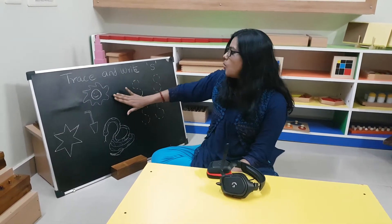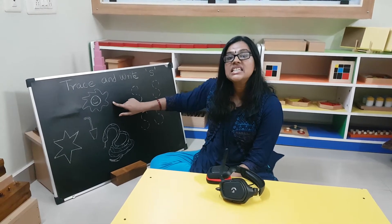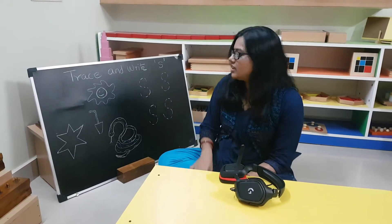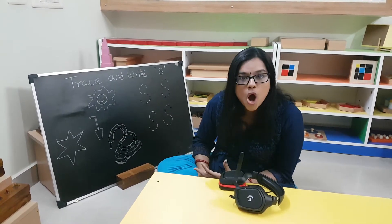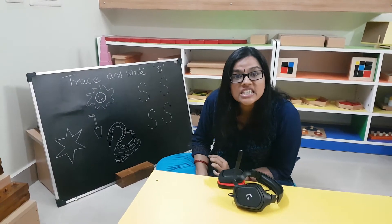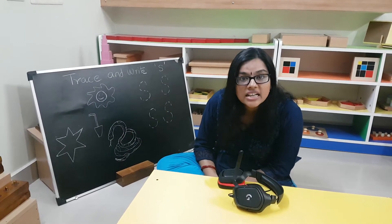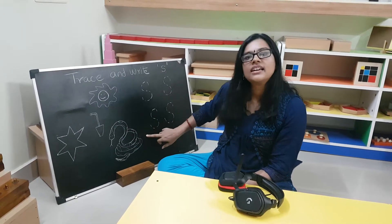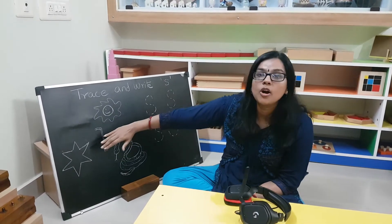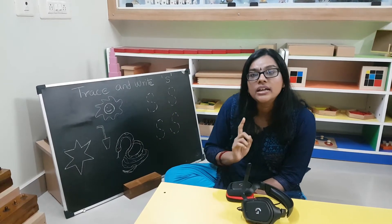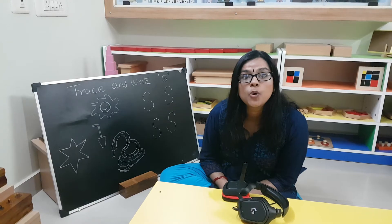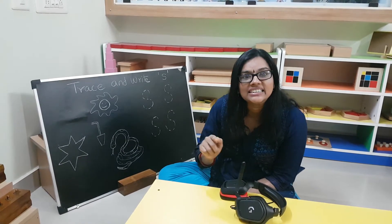Now let's get into these pictures. What does this say? It's a sun. And this is a straw — the straw that you use for drinking juices. Then you have a star. Finally, what is this? It's a snake. So while saying these words, what sound you hear is 'ss'. Sun, star, spoon, snake, sticker — they all start with the 'ss' sound.